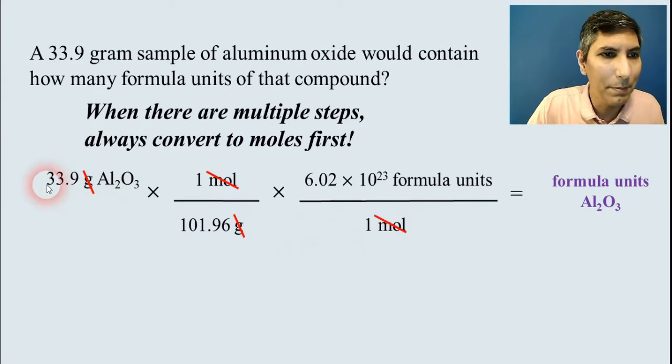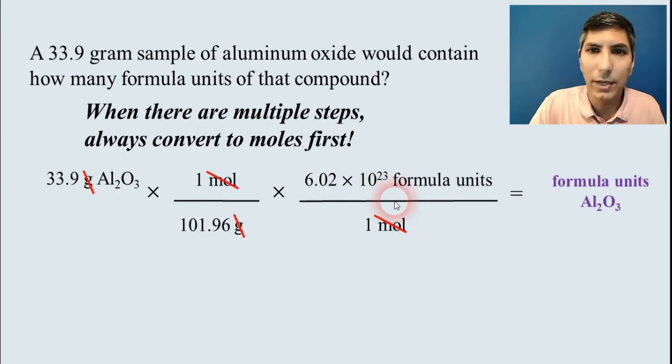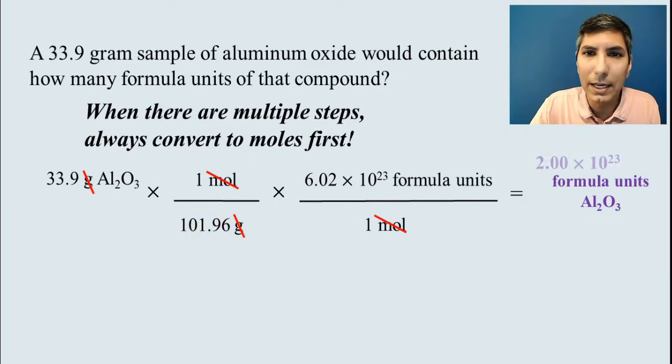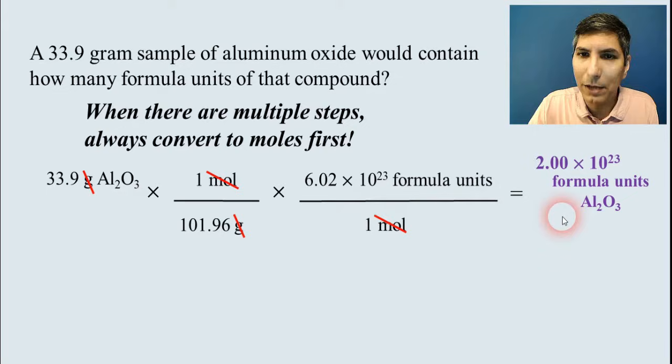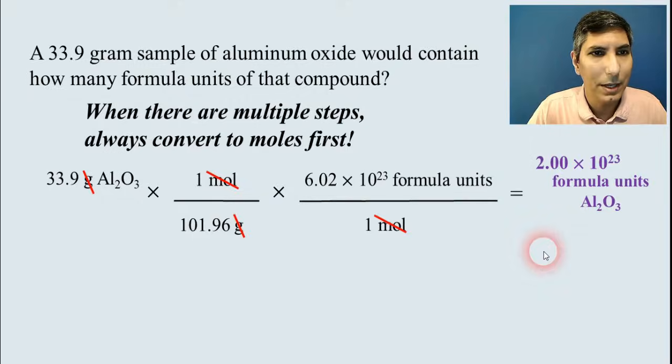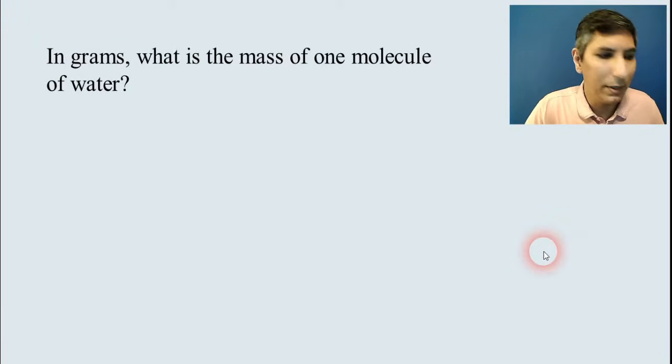So we can cancel moles. And on our calculator, we type in 33.9 divided by 101.96 times 6.02 times 10 to the 23rd. Just as a reminder, if the number is in the numerator, you multiply by that number. If it's in the denominator, you divide by that number. And so when you key it in, you should get an answer of about 2.00 times 10 to the 23rd formula units.